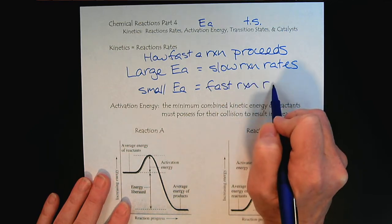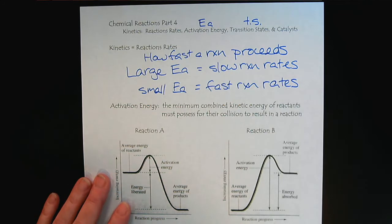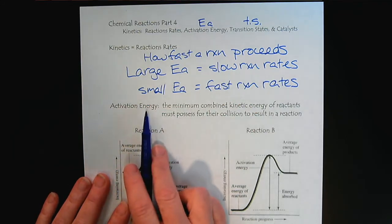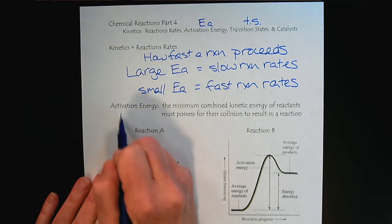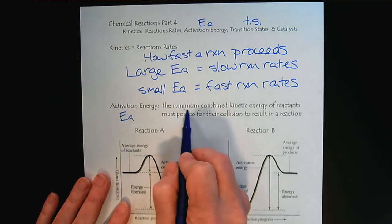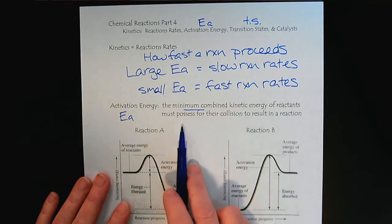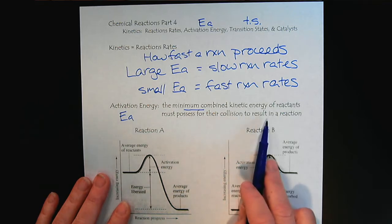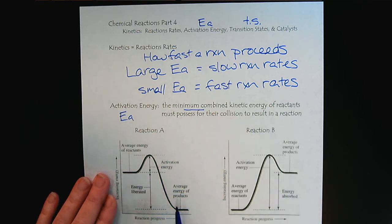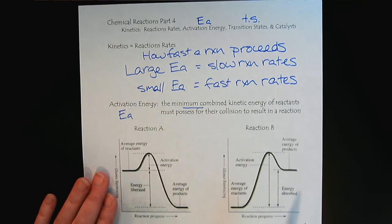We'll use graphs to help illustrate these relationships. As we learned from collision theory, the activation energy is the minimum energy — the combined kinetic energy of reactants — that they must possess for the collision to result in a reaction. Let's look at these two reactions here, reaction A and reaction B.